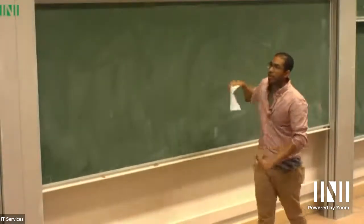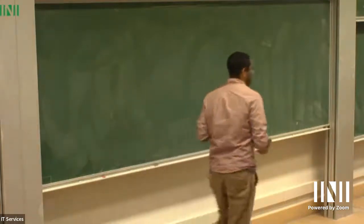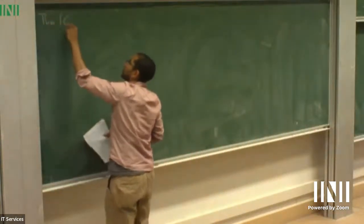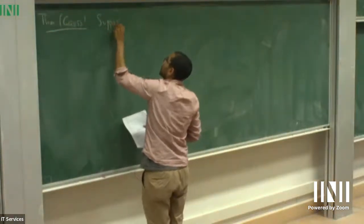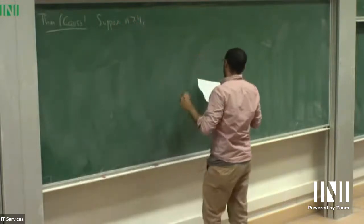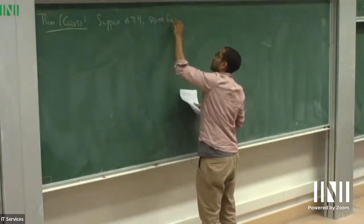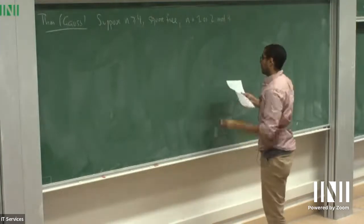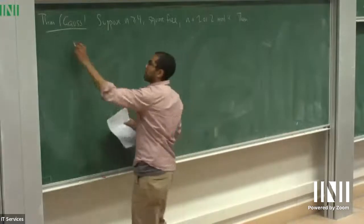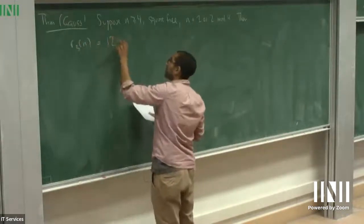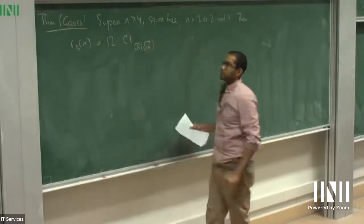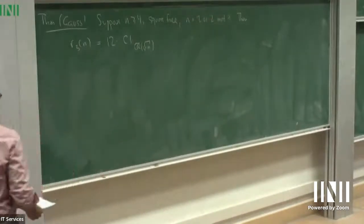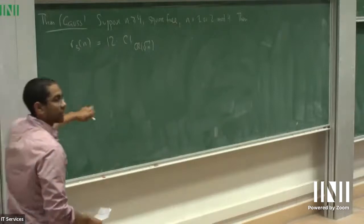Now I can come back to R3(n) and state the following old theorem of Gauss. Suppose n is at least 4, square free (not divisible by the square of any integer), and congruent to 1 or 2 mod 4. Then R3(n), the number of ways you can write n as the sum of three squares, equals 12 times the size of the class group of the field Q adjoint square root of minus n. Gauss didn't have groups, but he had binary quadratic forms, and there's a way of understanding class groups of quadratic fields in terms of binary quadratic forms.